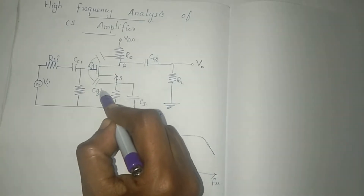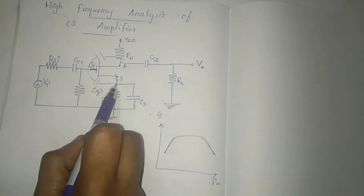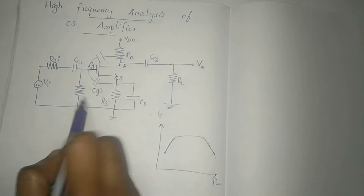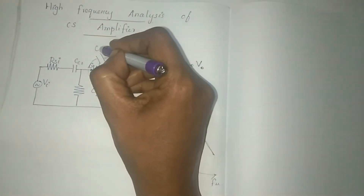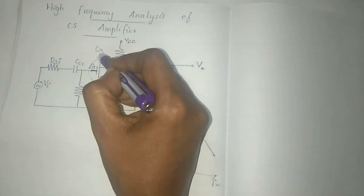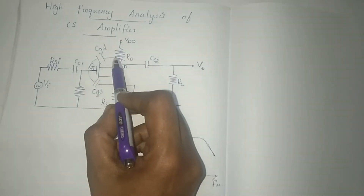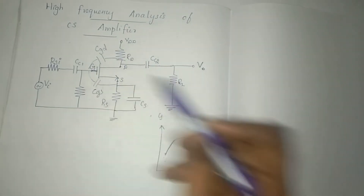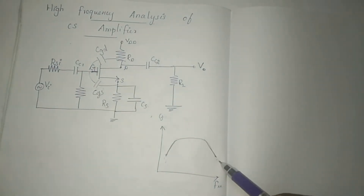The gate and source are connected by capacitance CGS. The gate and drain are connected by capacitance CGD. These two capacitances are the high frequency internal capacitances.